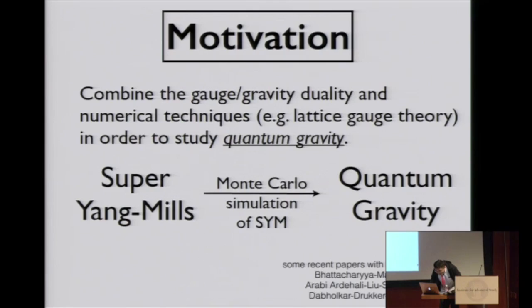Our motivation remained unchanged since last century. We want to study quantum gravity by looking at super Yang-Mills. Gauge-gravity conjecture, if true, claims that if we can solve super Yang-Mills, we can learn something about quantum gravity.